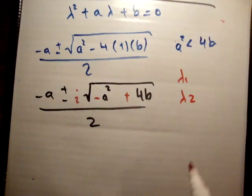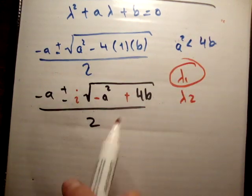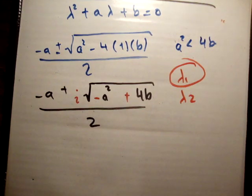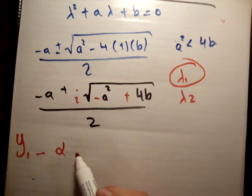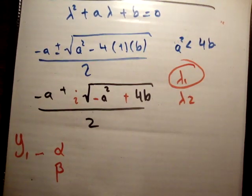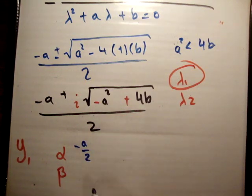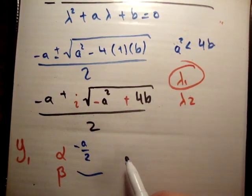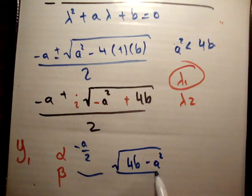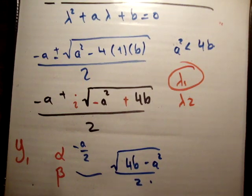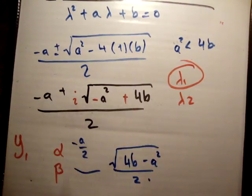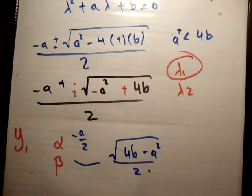In the case with complex roots, to get the first solution y1, we define alpha and beta. Alpha is simply negative a over 2, and beta is equal to the square root of (4b minus a squared) over 2 — just the real and imaginary components, not including i.